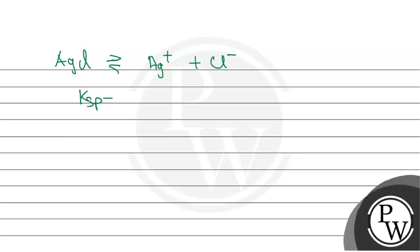For AgCl, Ksp equals Ag+ concentration multiplied by Cl- concentration. Ksp is equal to 1.8 × 10^-10.